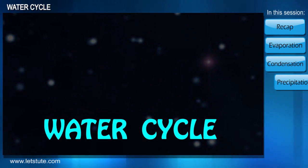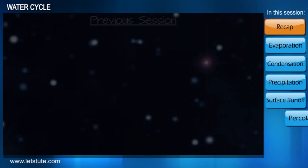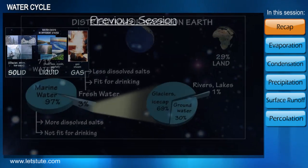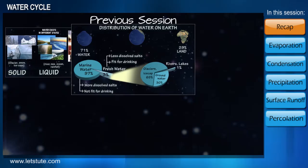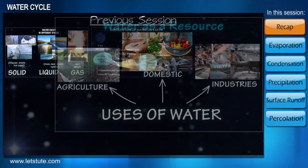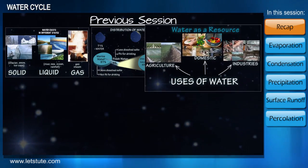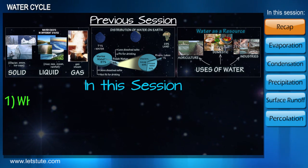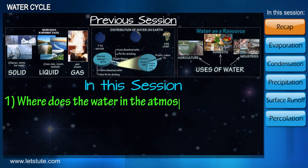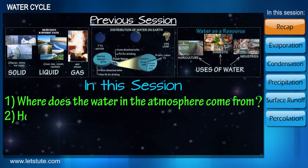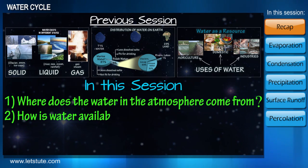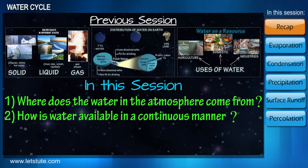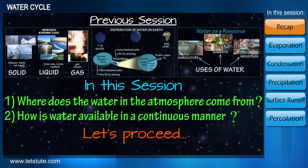Water cycle. In our previous session we learnt about the availability of water in various forms and the various uses of water. Moving ahead in this session, we shall see where does the water in the atmosphere come from, and how is water available for our various uses in a continuous manner. Let's move ahead step by step.